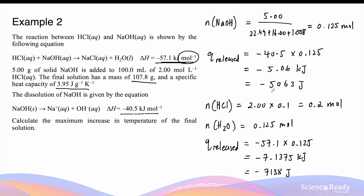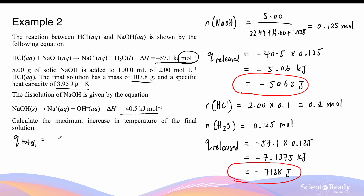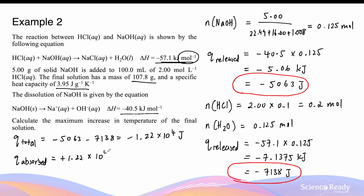To summarize so far: the dissolution of sodium hydroxide produces minus 5063 joules, and the neutralization produces minus 7138 joules. The total energy produced is the sum of both, equal to minus 1.22 × 10⁴ joules. Again, we assume that all energy produced is completely absorbed by the solution and none is lost to the surroundings, so the energy absorbed by the solution is positive 1.22 × 10⁴ joules.